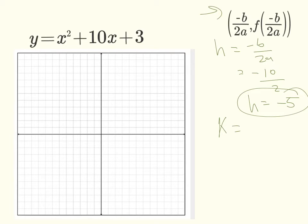So K, we plug in negative 5 any time we see an X. All right? So it's going to be negative 5 squared, which is 25, plus a negative 5 times 10, which is negative 50, plus 3. All right? So K here is going to be equal to 25 minus 50 is negative 25, plus 3 is negative 22.